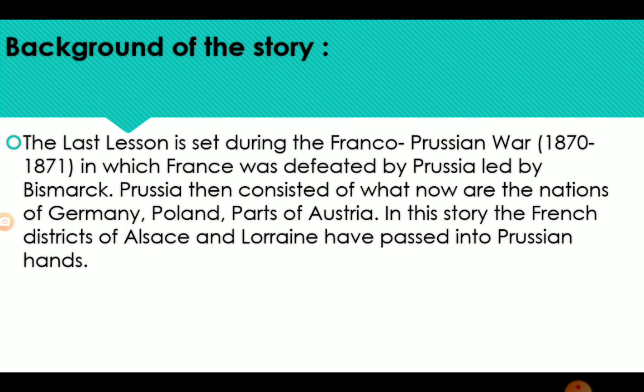Background of the story: The Last Lesson is set during the Franco-Prussian War of 1870–1871, in which France was defeated by Prussia led by Bismarck. Prussia then consisted of the nations of Germany, Poland, and parts of Austria. In this story, the French districts of Alsace and Lorraine have passed into Prussian hands.